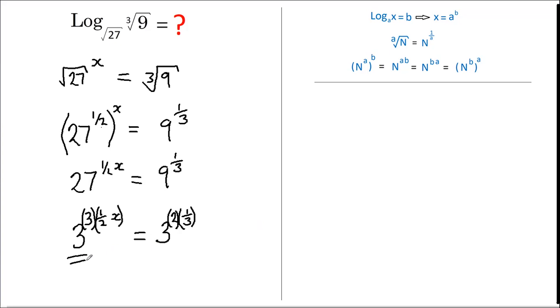So we now have the base is the same at 3. Therefore, the powers must be the same. Therefore, this, which is 3 over 2 X, must equal this, which is 2 thirds.